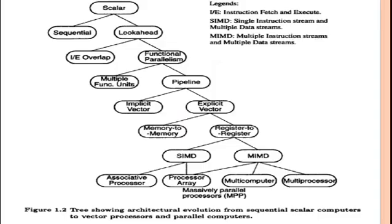Looking at look-ahead parallelism and pipelining, the figure shows a tree illustrating architectural evolution from sequential scalar computers to vector processors and parallel computers. Starting with von Neumann architecture — a sequential machine executing scalar data — the sequential computer was improved from bit-serial to word-parallel operations and from fixed-point to floating-point operations. Von Neumann architecture is slow due to sequential execution of instructions.